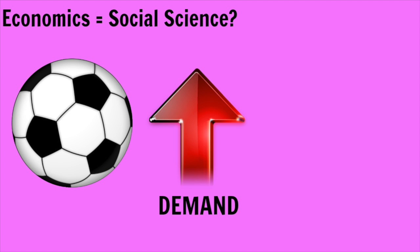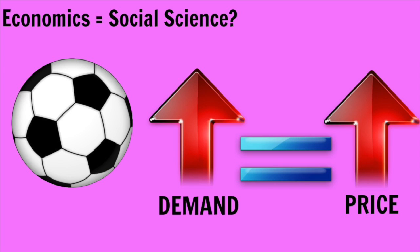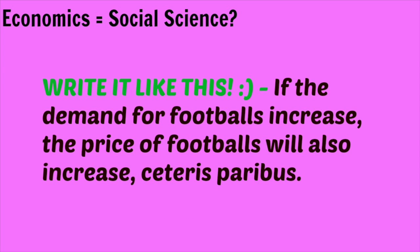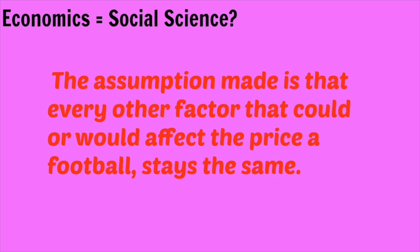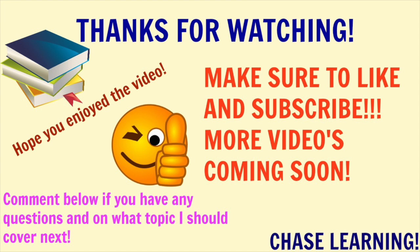For example, let's say the demand for footballs increased during the World Cup. Now, using the law of demand, which we will get into in another video, we would say that the price of footballs will also increase, Ceteris Paribus. This means that we are assuming that every other factor in the price of footballs stays the same, even including the supply of footballs.